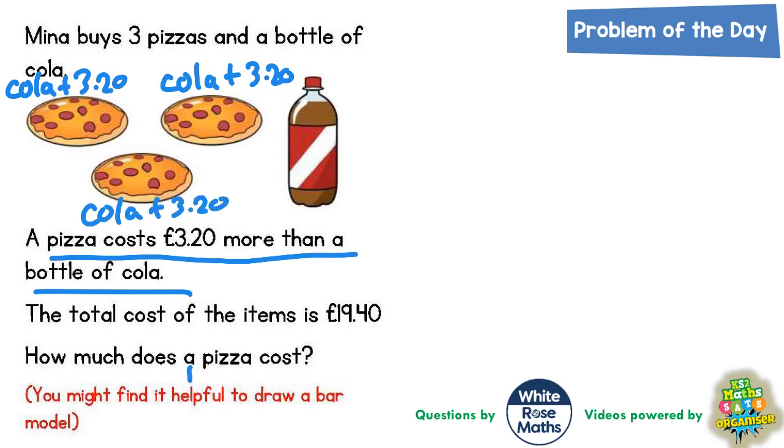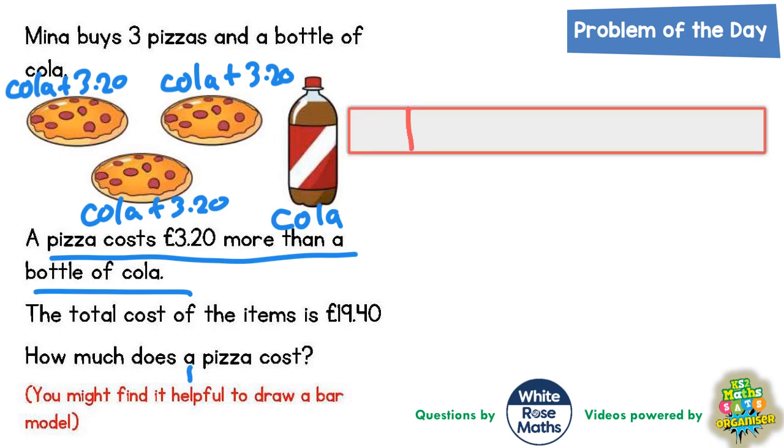Now, it does suggest drawing a bar model. So, obviously, we've got three pizzas all with a bottle of cola plus an extra £3.20, and then we've got an extra bottle of cola on its own at the end. So when we draw our bar model, we're actually going to need seven sections.